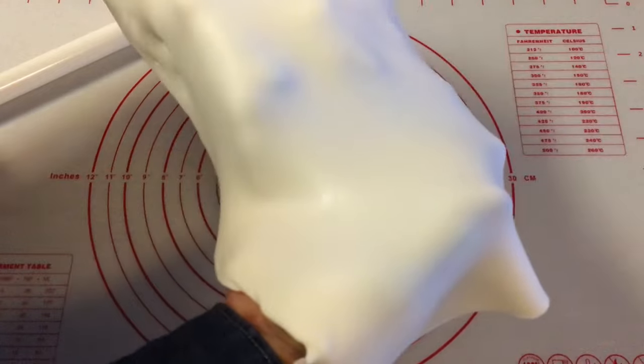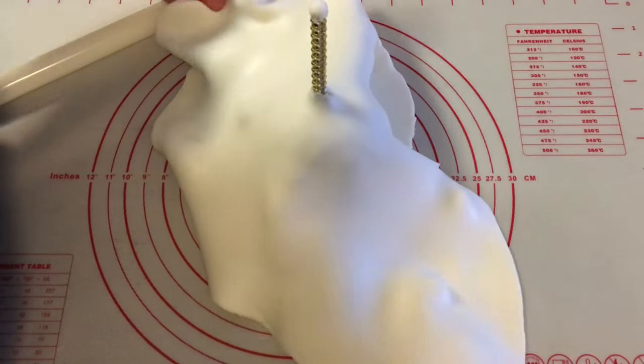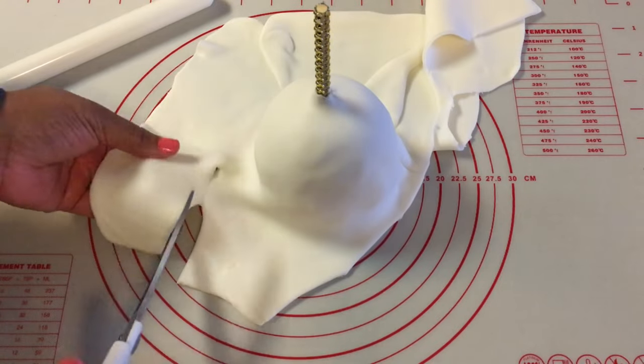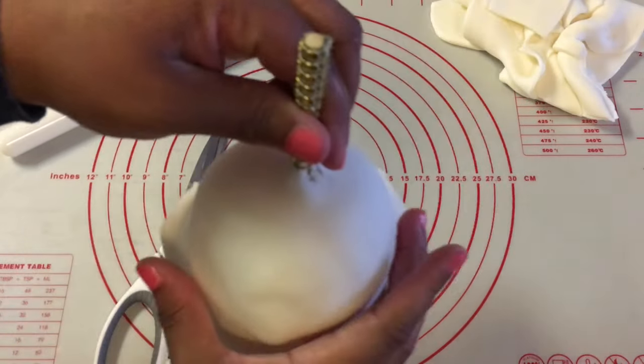Okay, so what I am doing right now is draping over the fondant, over the candy apple. And then I am going to, right here, cut the extra fondant.